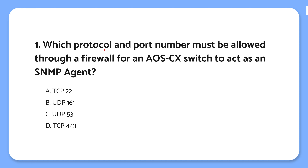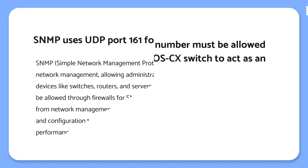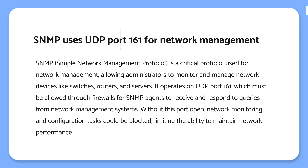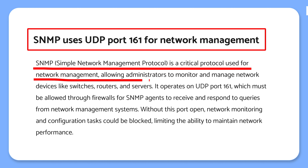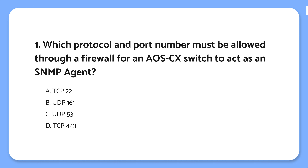Question 1: Which protocol and port number must be allowed through a firewall for an AOS-CX switch to act as an SNMP agent? The knowledge point here is that SNMP uses UDP port 161 for network management. SNMP is used to monitor and manage network devices like switches and routers. It works on UDP port 161, which needs to be open on firewalls so SNMP can receive commands from network management tools. The correct answer is: SNMP uses UDP port 161 to send and receive management data — the main port that allows network management systems to talk to devices like switches and routers.